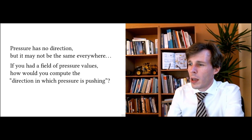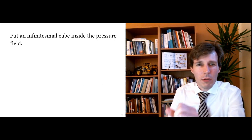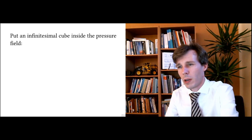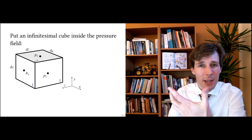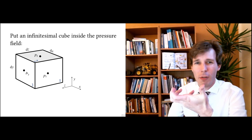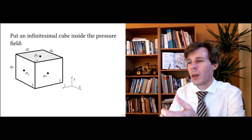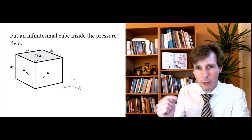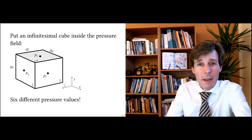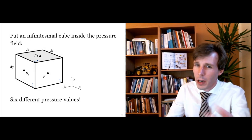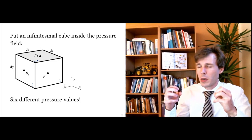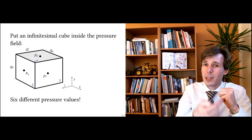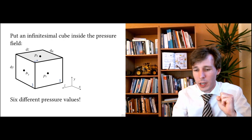To do this, we have to consider not a single point but a small volume inside the fluid. What we take is a cube — an infinitely small but still finite volume cube. This cube has six sides, and on each of those six sides you will have one value of pressure. So we have six different pressure values, one on each side.